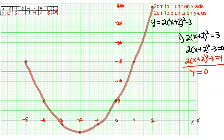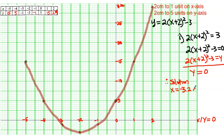When y = 0, that is the same as the x-axis. So we look at where the parabola goes through y = 0 — where it crosses the x-axis. Those intersection points give us the solutions. Reading from the graph: x ≈ -3.2 and x ≈ -0.7.